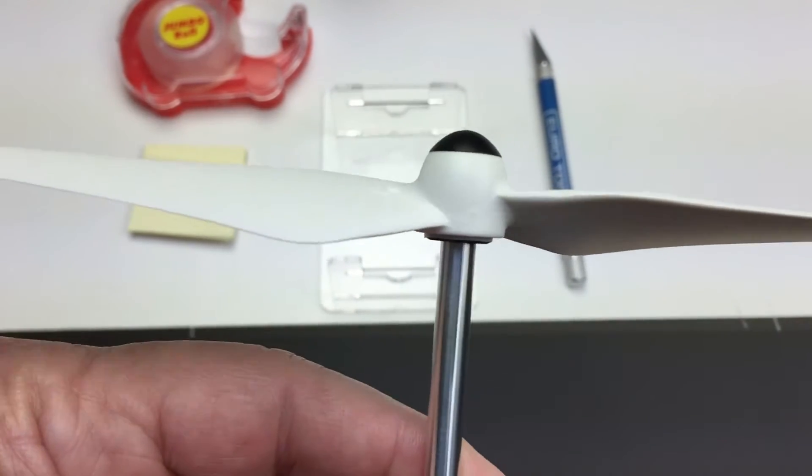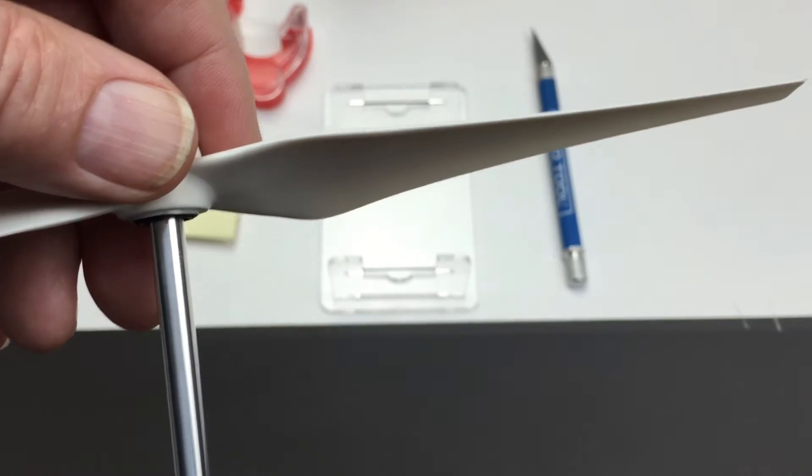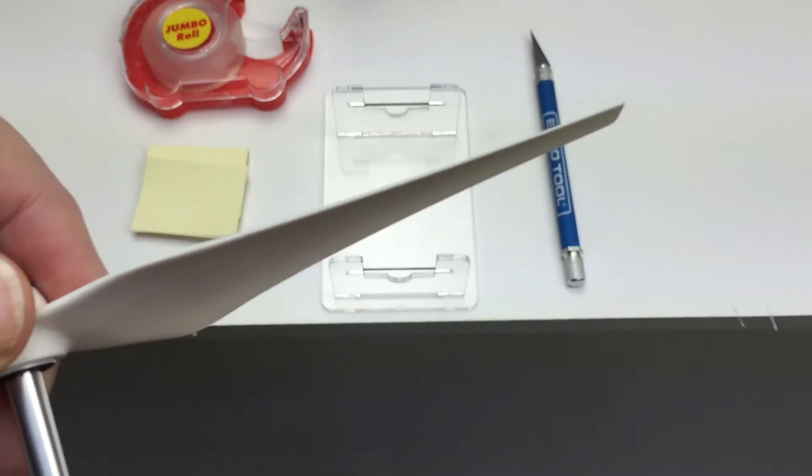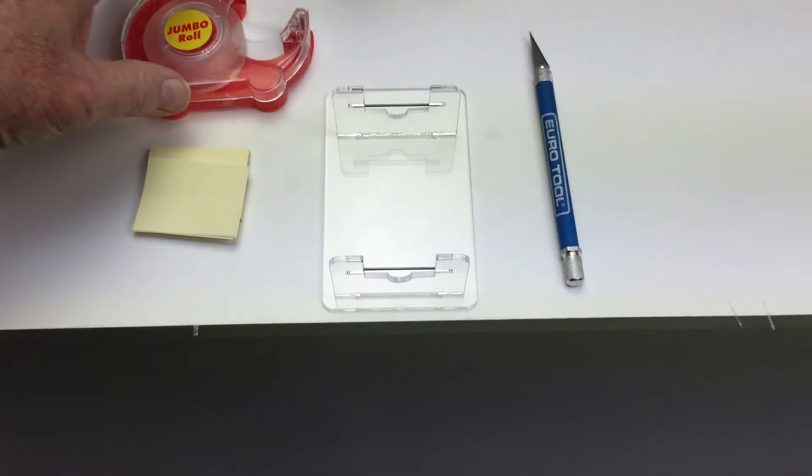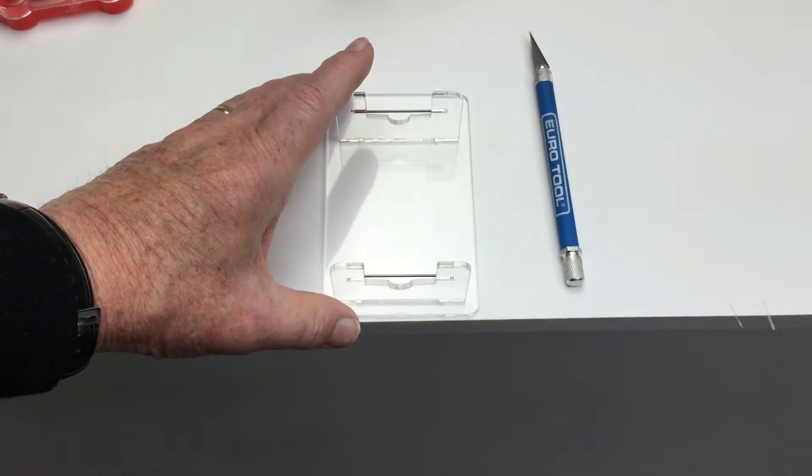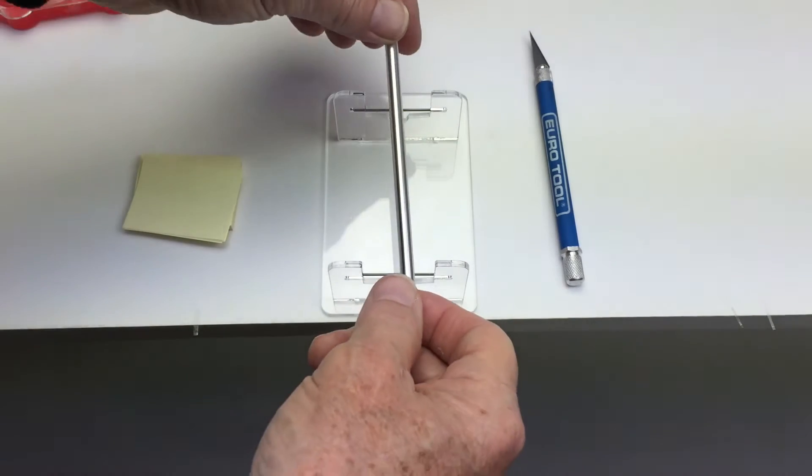This rod is perpendicular to the center axis of the prop, which makes it easy to balance. The first thing we need to do is be sure that the balance mechanism itself is level.